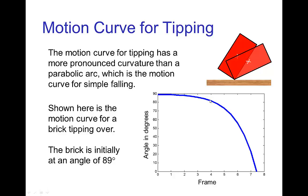Then in the remaining time, it turns rather quickly the remaining eighty degrees. We see that this motion curve for tipping has a much more pronounced curvature than the motion curve that would be a parabolic arc. We have much more texture in the timing and spacing for something tipping over as you see in this motion curve.